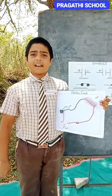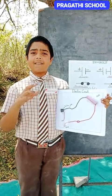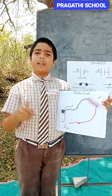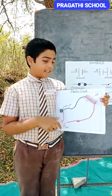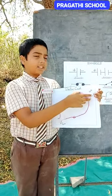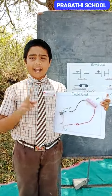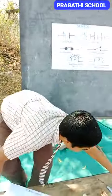A cell is a device which converts its stored chemical energy into electrical energy. A cell has two terminals: a positive terminal and a negative terminal.